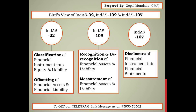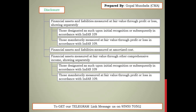The provisions of Indian AS 107 are correlated with Indian AS 109, because Indian AS 109 provides provisions with respect to the recognition, measurement, and de-recognition of financial instruments — which basically includes financial assets, financial liabilities, and equity instruments. Under Indian AS 109, we understand the measurement of financial instruments based on various methods: fair value measurement through profit and loss, fair value measurement through other comprehensive income, and measurement at amortized cost. This basis of measurement shall also be disclosed under Indian AS 107.